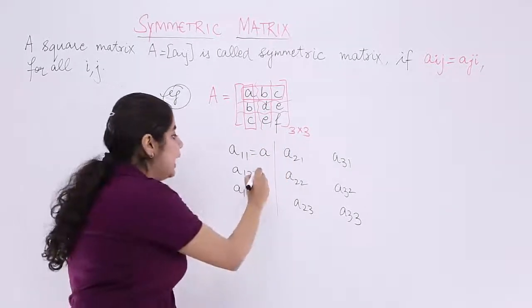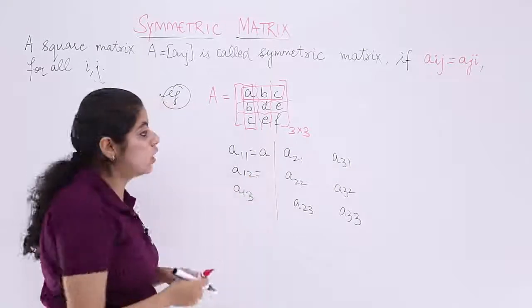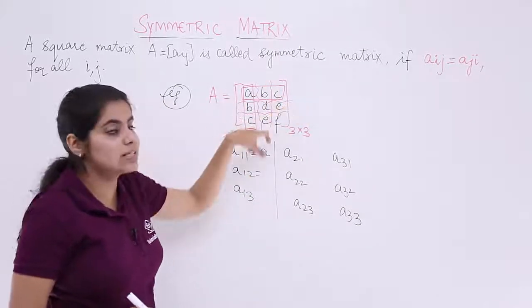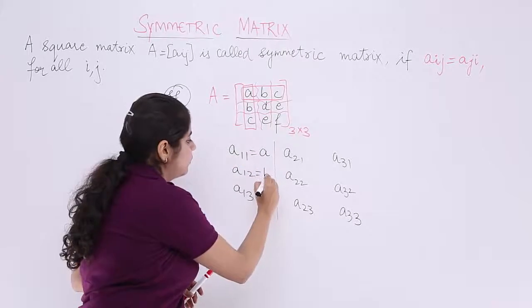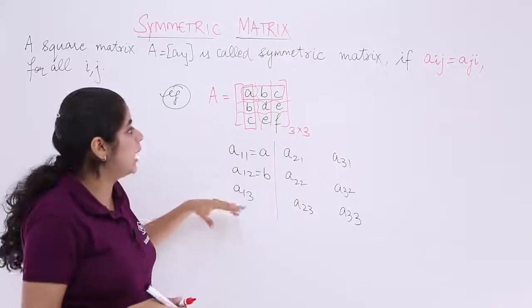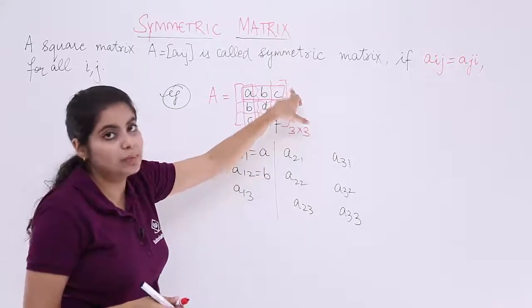What is A12? A12 means first row, second column. Where is first row? It's here. Where is second column? It is B. A13 means first row, third column, it is C.